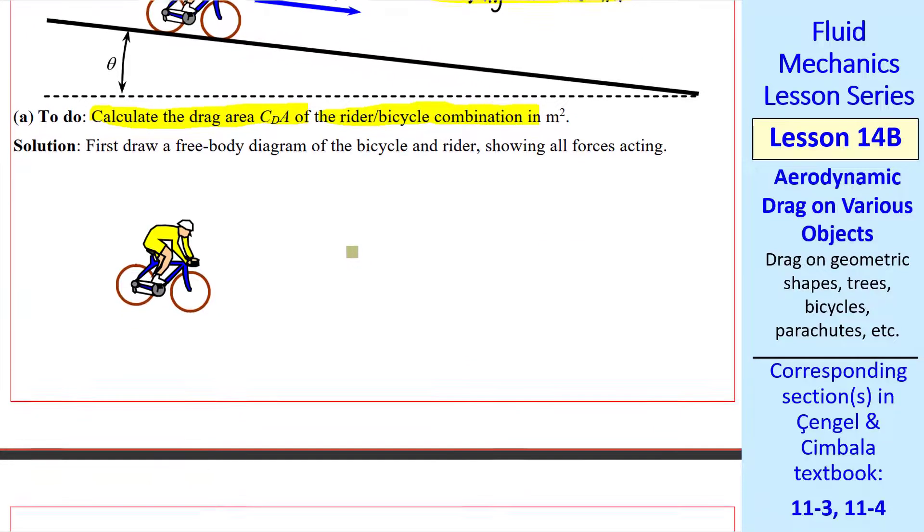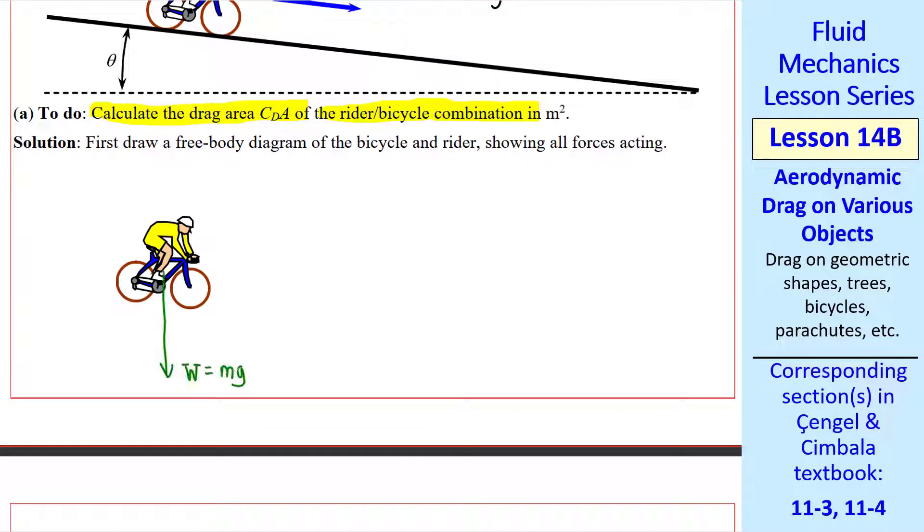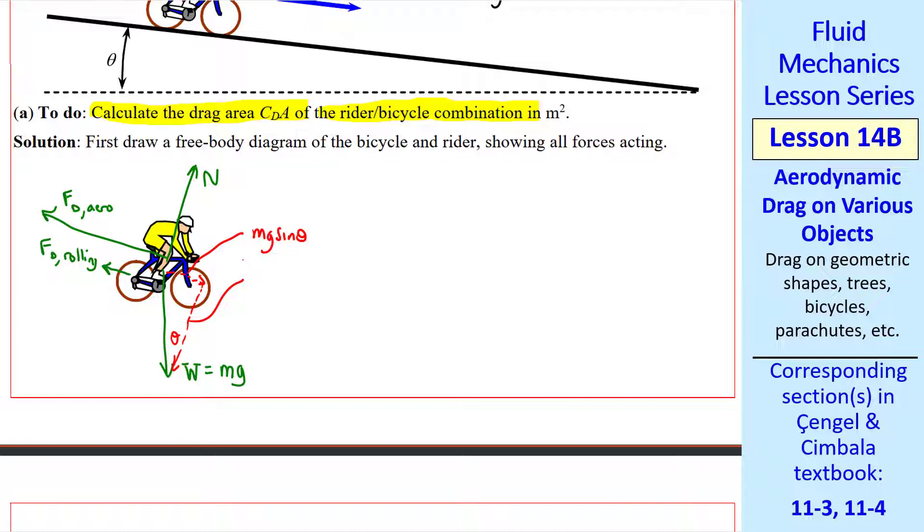So the first thing we do is draw a free body diagram. We have a weight downward, a normal force normal to this sloped road, an aerodynamic drag, and a rolling resistance drag. Both of these are parallel to V. We're ignoring any lift force, which should be negligibly small. Let's split up the weight into two components. The component in the direction of travel is mg sine theta, and the component in the negative normal direction is mg cosine theta.